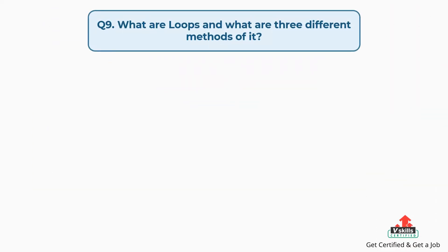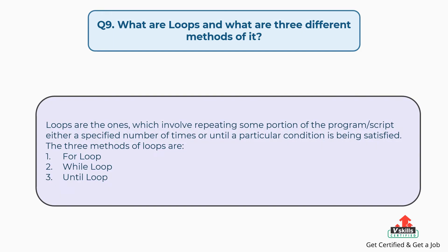Question number nine: what are loops and what are the three different methods? Loops involve repeating some portion of the program or script either a specified number of times or until a particular condition is satisfied. The three methods of loops are: first, for loop; second, while loop; third, until loop.